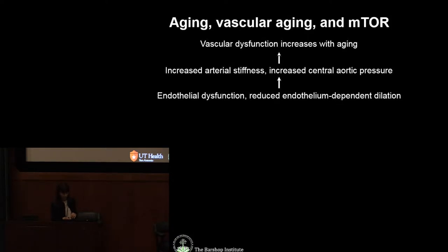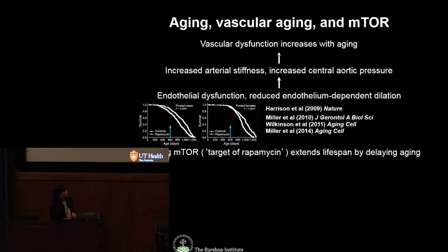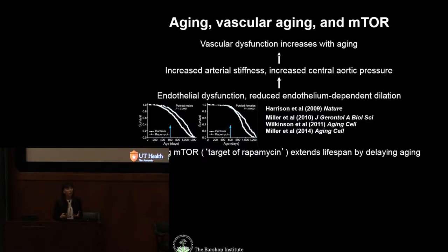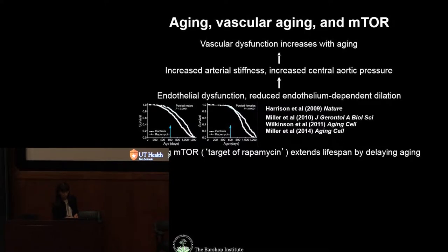A few years ago, a breakthrough came in the field of aging: the first demonstration of a gene — a particular protein, a kinase called the target of rapamycin — was shown to be involved in the regulation of aging in mammals, more precisely in mice. This was only discovered in 2009, opening up a number of possibilities.